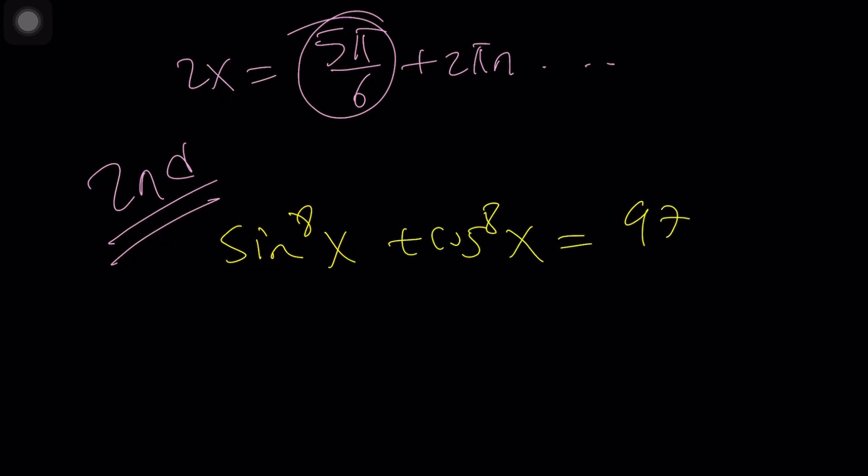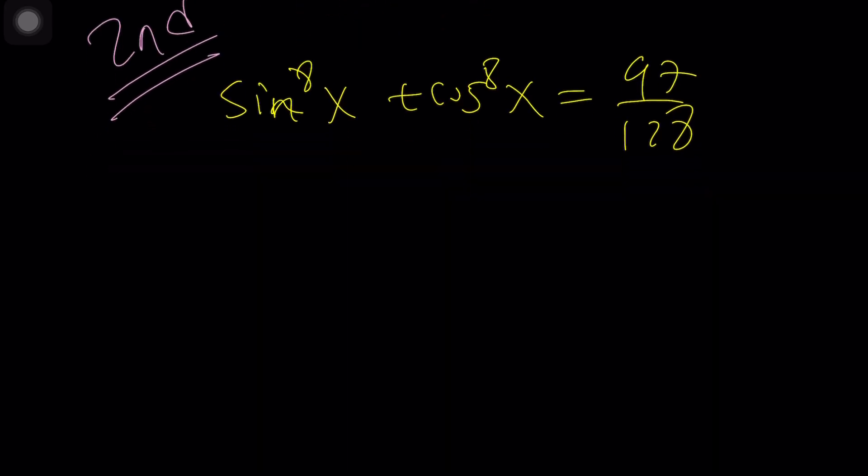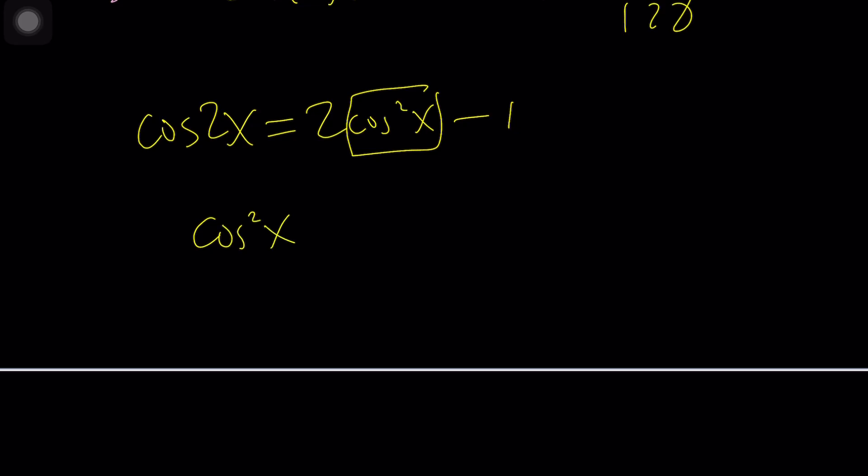So now we have the sum of the eight powers and the answer is 97 over 128. Now we can do the following: cosine 2x can be written in three ways but I'm going to use two of them. One of them is 2 cosine squared minus 1. From here I can isolate cosine squared and write it as 1 plus cosine of 2x divided by 2.